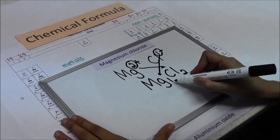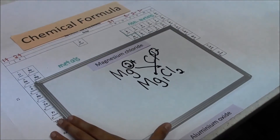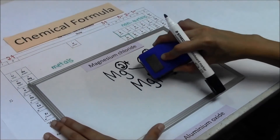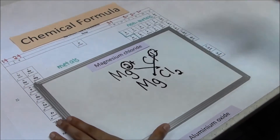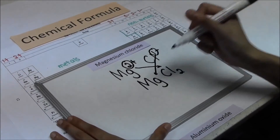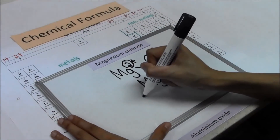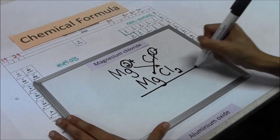Number one — we usually don't write it in the chemical formula. So the chemical formula for magnesium chloride is MgCl₂.